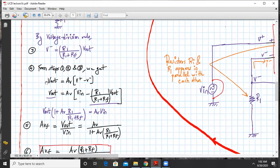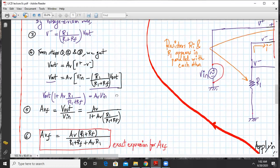if we rewrite this expression Vout equals AV times V plus minus V minus: V plus is Vin and V minus is R1 upon R1 plus RF times Vout. So we substitute all these terms together. We'll club the terms of Vout together.